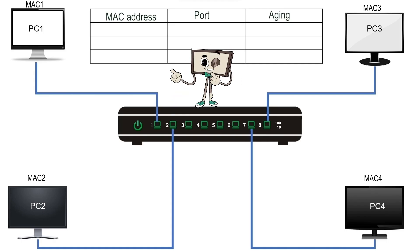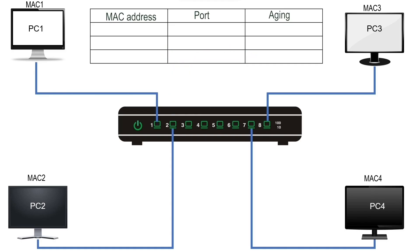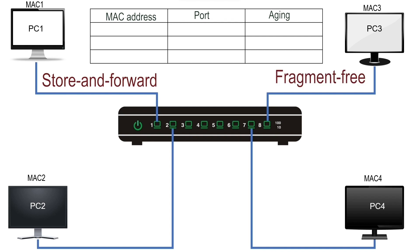A switching method explains how a switch starts the forwarding phase. There are three switching methods: the store-and-forward method, the fragment-free method, and the cut-through method.